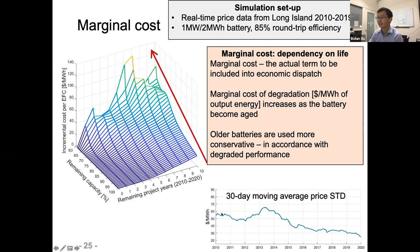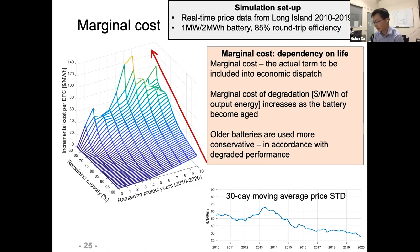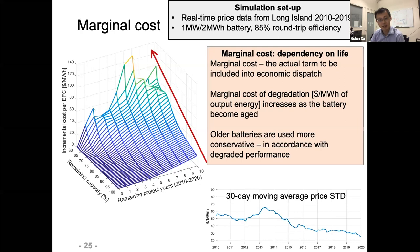The marginal cost also correlates with the certainty moving-average price deviation in Long Island from 2010 to 2020, showing high coupling. A key takeaway is that with an aged battery we should use it much more conservatively — a much higher marginal cost — which aligns with the physical properties of second-life batteries that have higher impedance and less stable internal dynamics. So both economically and physically, second-life batteries should be operated more conservatively.